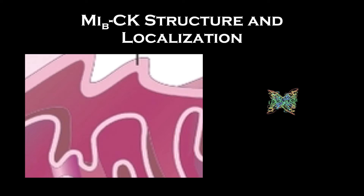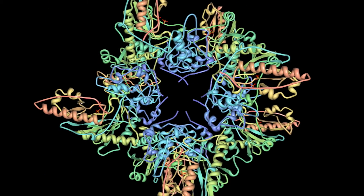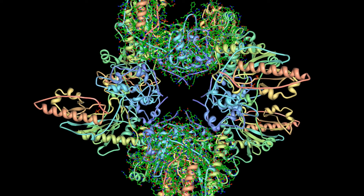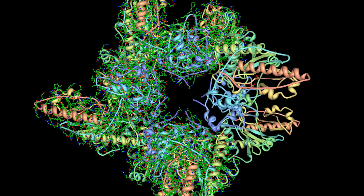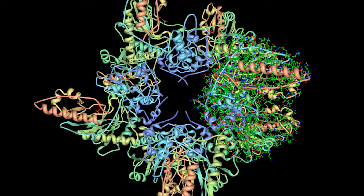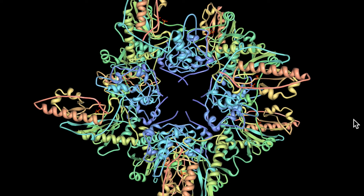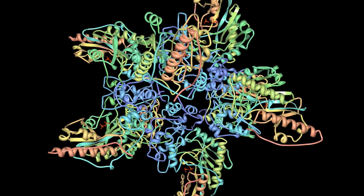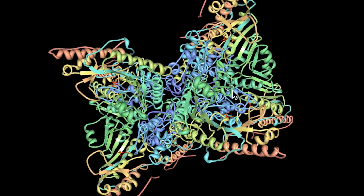Mitochondrial CK is located in the intermembrane space of the mitochondria. It can be free-floating in the intermembrane space or bound to both the inner and outer membrane of the mitochondria, holding them together at a contact site. The structure consists of four identical dimers that come together in a cube-like fashion to form an octamer. This cube-like structure can be seen when looking at the structure from the top, like so, yielding two opposing bottom and top faces that can interact simultaneously with the inner and outer membrane.